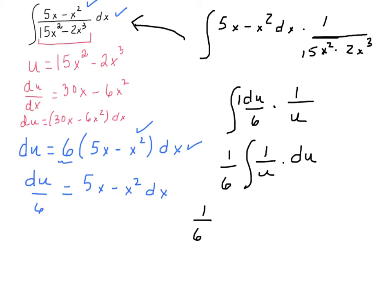Go ahead and anti-differentiate. And you end up with (1/6)ln|u| + C. And then your final step is just to take it back to x. So (1/6)ln|15x² - 2x³| + C.